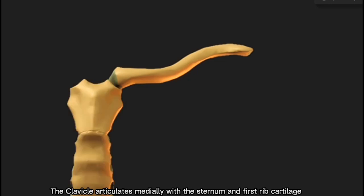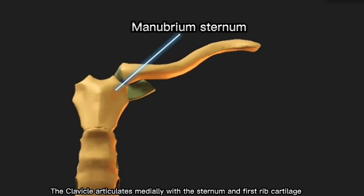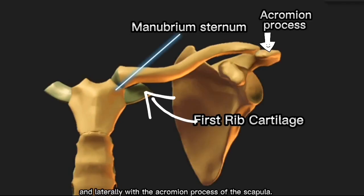Articulation: The clavicle articulates medially with the sternum and first rib cartilage and laterally with the acromion process of the scapula.